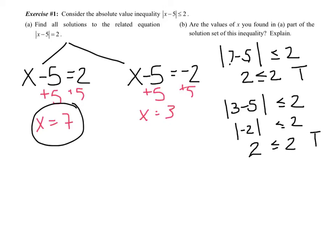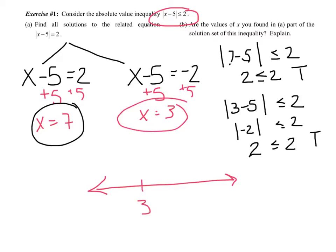Because it had an inequality, we're going to make a number line like we did on the quadratic inequalities. We'll stick our two solutions on there — three and seven — in order from least to greatest. Since it's less than or equal to, I want closed circles. And I just need to test a number: zero on this side, four on this side, and eight on this side, to see where I shade.